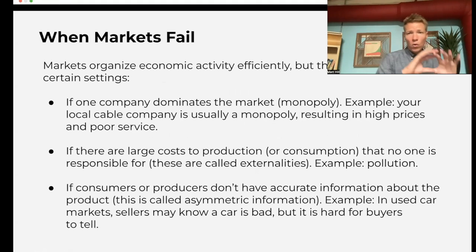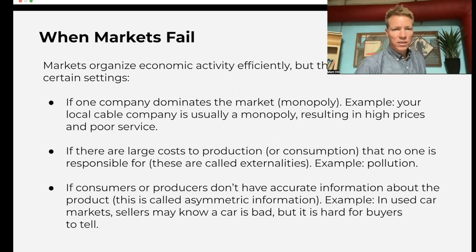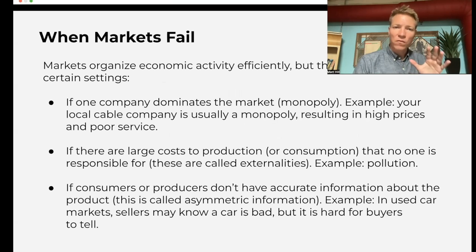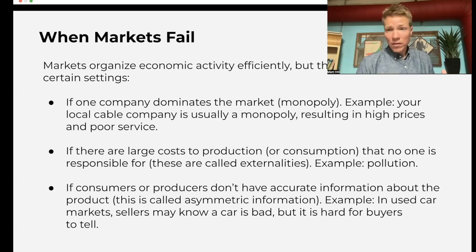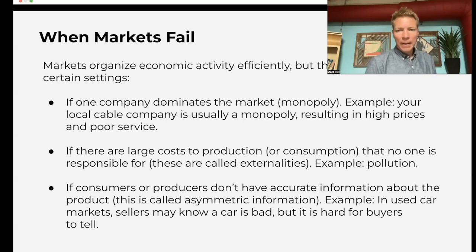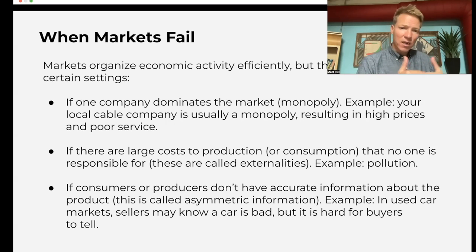Now, this whole lecture has basically been singing the praises of markets — look how great markets are, they bring us all these goods. But in this last slide, we're not dogmatic about markets. We know they can fail in some settings. If one company dominates the market, that's a monopoly and it subverts market processes. Externalities — the classic example is pollution — markets often don't do a good job of pricing those in. And if there's asymmetric information, where consumers and producers don't have the same set of information, the market may not function well.